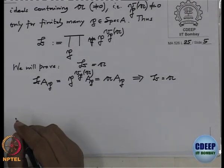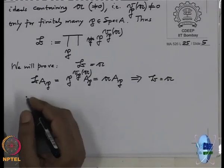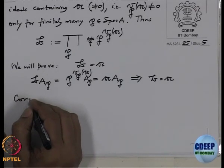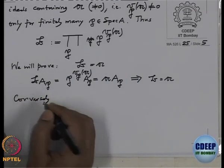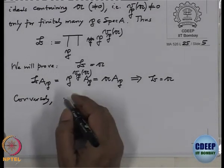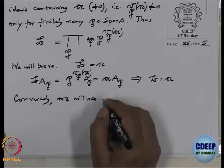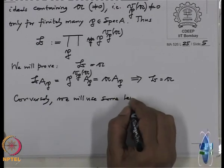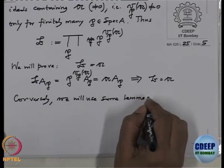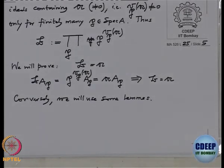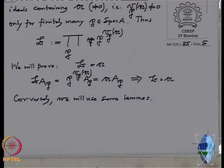That proves: if A is a Dedekind domain, then every ideal is a product of prime ideals. Conversely, the other direction is a bit more involved. We will use some lemmas — two or three simple ones that we need to prove. If you observe carefully, this proof is an imitation of the same proof as the fundamental theorem of arithmetic: the same ideas, only the numbers are replaced by ideals.